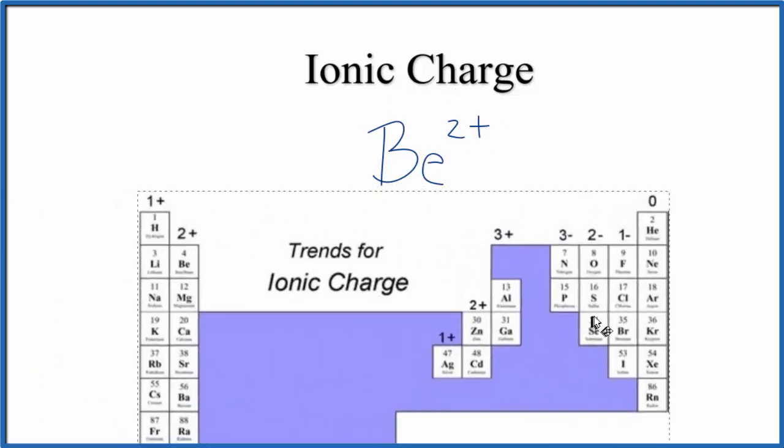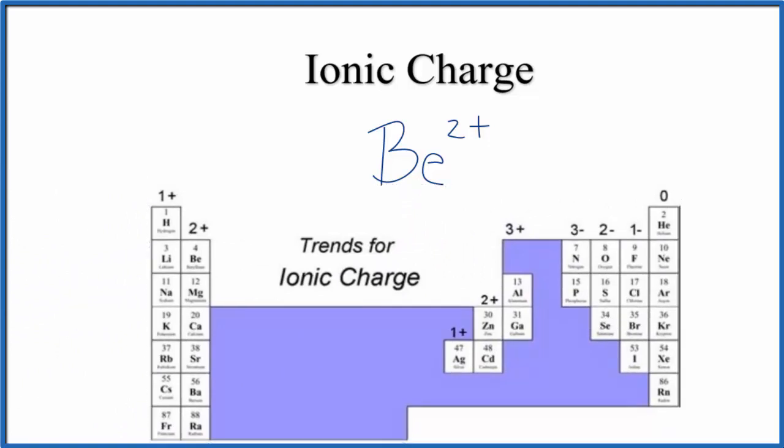So whether you memorize the trend on the periodic table for ionic charge, or you look at the electron configuration, beryllium, the ionic charge in beryllium is 2+.